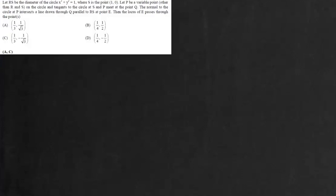Now here are the questions. Let R and S be the diameter of this circle where S is this point (1,0). Let P be a variable point other than R,S on the circle and tangents to the circle at S and P meet at point Q. The normal to the circle at P intersects a line drawn through Q parallel to RS at point E. Then locus of E passes through which of the following point.